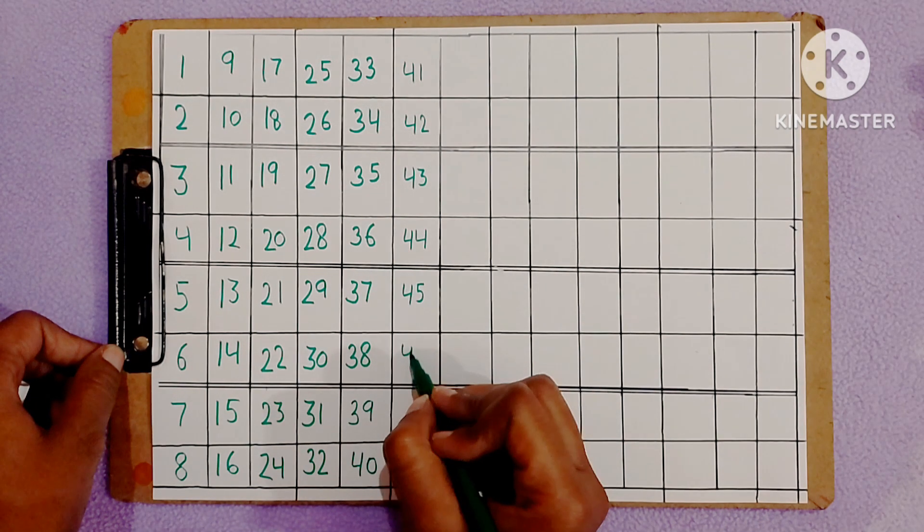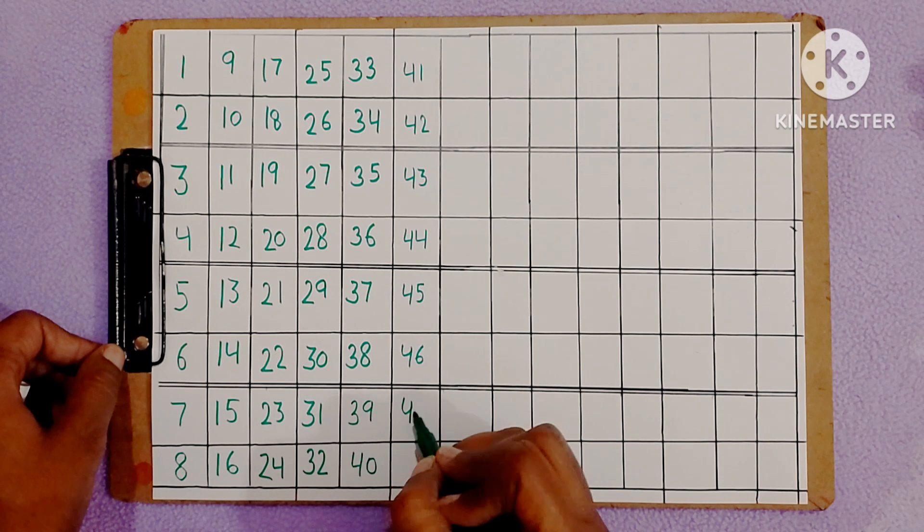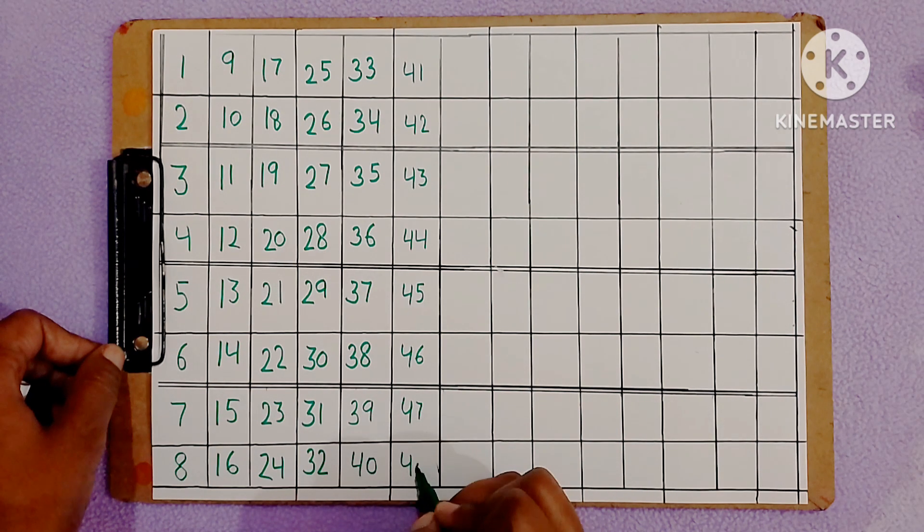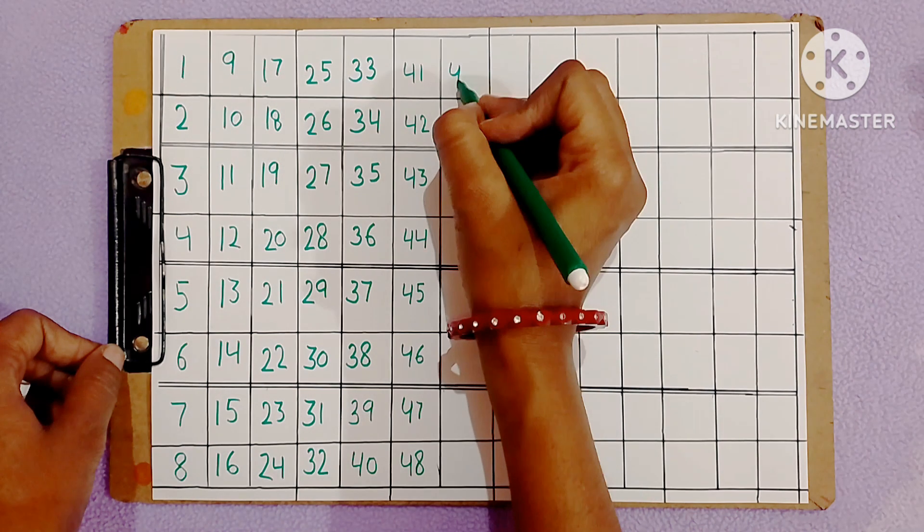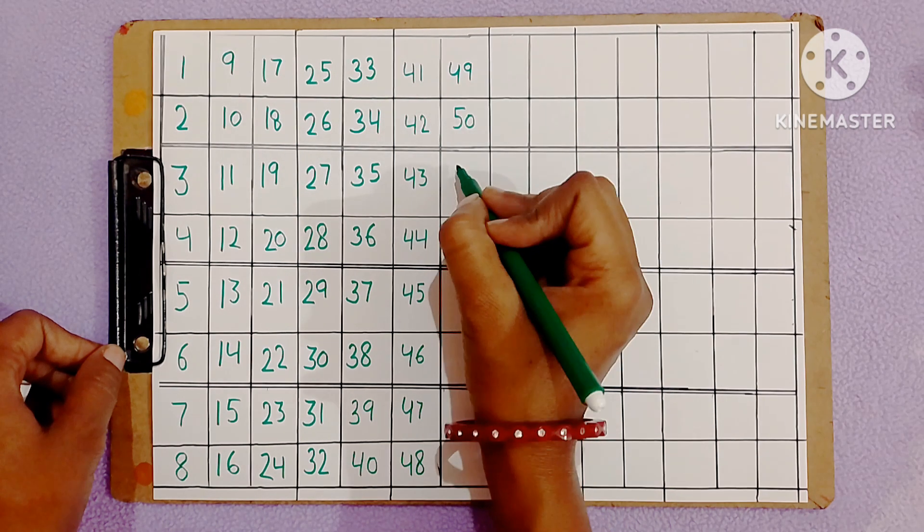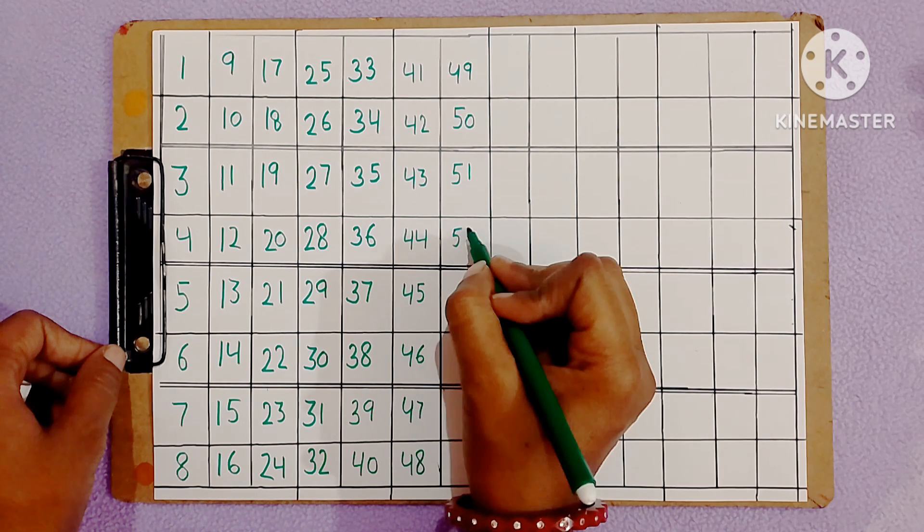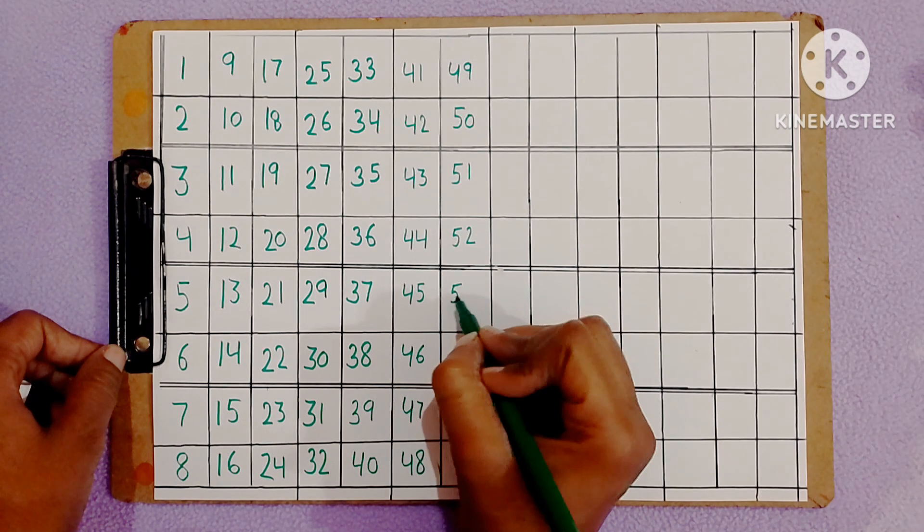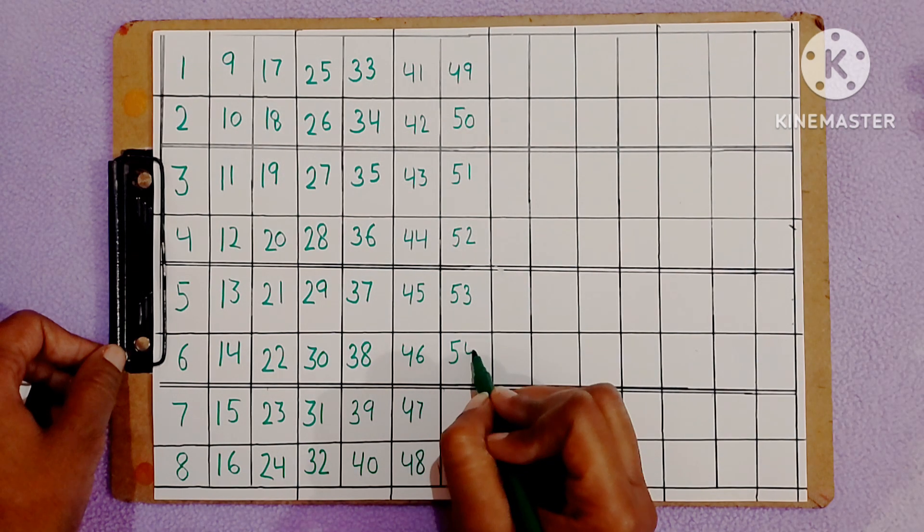Forty-five, forty-six, forty-seven, forty-eight, forty-nine, fifty, fifty-one, fifty-two, fifty-three, fifty-four.